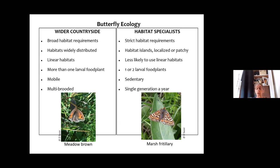Specialists are much stricter in their habitat requirements, tending to occupy habitat islands isolated from other patches, quite localised, and they don't use linear habitats as much. They rely on one or maybe two larval food plants — the plants that caterpillars feed on — and they very often only have one generation as well.